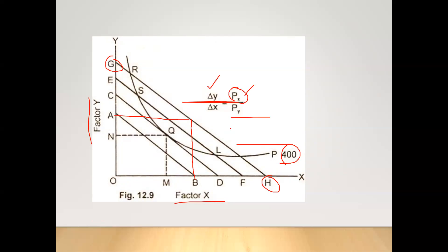In the next video, we will discuss returns to scale, also called the long-run production function, where all factors are variable — nothing is fixed. Unlike the short-run production function where only one or two inputs are variable and the rest are fixed, in the long run all factors can change. Please stay tuned and keep watching.